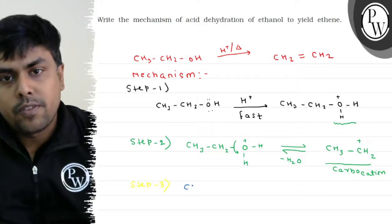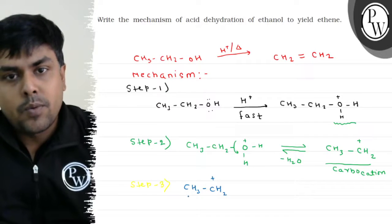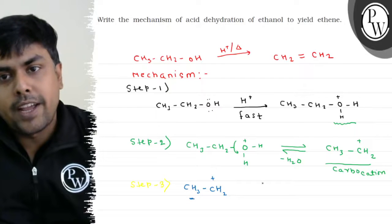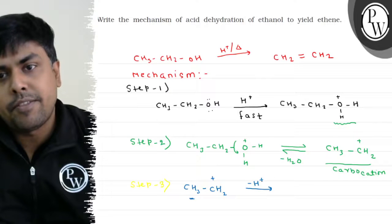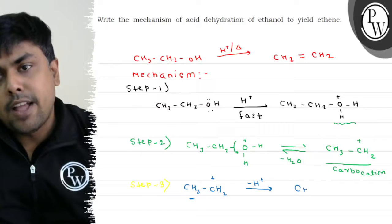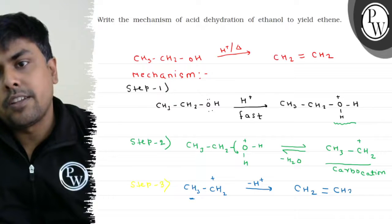So, elimination of CH3, CH2 positive. Obviously, what I will do? I will remove one of the acidic hydrogen from here. So, minus H plus. Relatively fast. And I will have the formation of CH2 doubly bonded CH2.